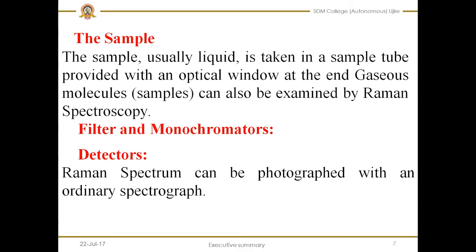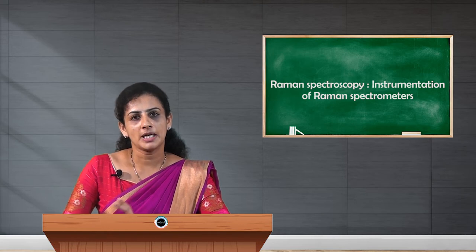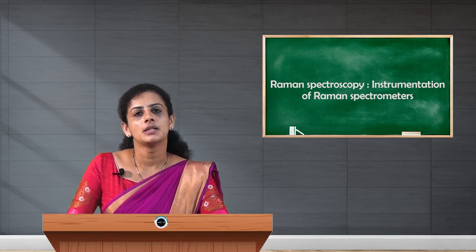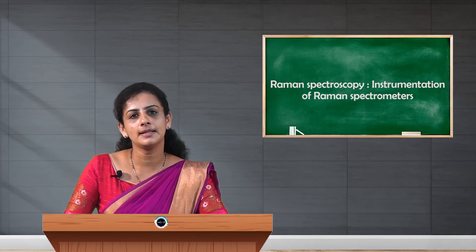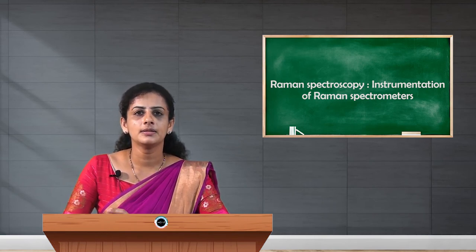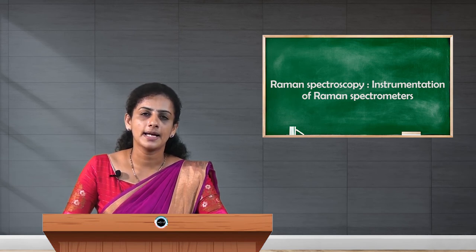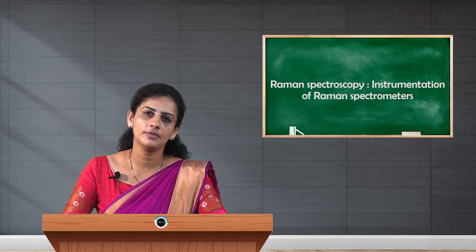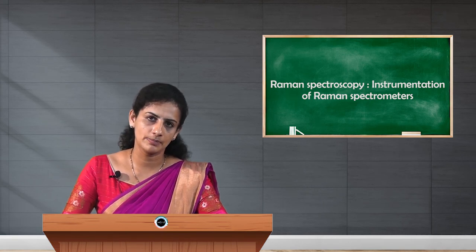The next component is the sample. The liquid sample can be taken in a sample tube, and that sample tube is provided with an optical window at the other end. Gaseous samples are also measured using a Raman spectrometer. If the mercury arc lamp is used as a source, then the radiation passes through the cylindrical walls of the sample tube, then the light is scattered and the scattered light escapes out of the optical window present at the other end of the sample tube.